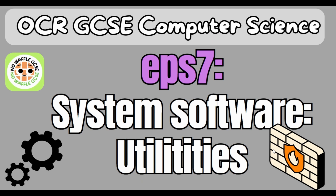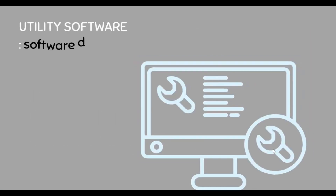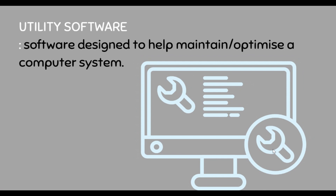UCR GCSE Computer Science episode 7: system software utilities. In this video we'll be looking at what is utility software, defragmentation, compression, and encryption, and we'll end with some exam questions. Utility software is software that is designed to help maintain or optimize a computer system.